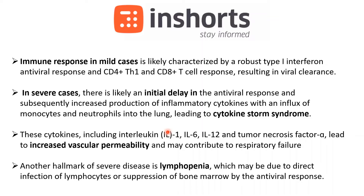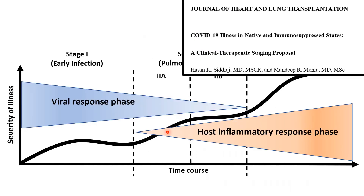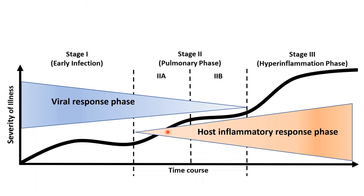This is a very important diagram published in the Journal of Heart and Lung Transplantation, where they proposed a clinical targeted staging of COVID-19 response. Most of our treatment is based on this concept. It is divided into Stage 1, Stage 2, and Stage 3. Stage 1 is the viral response phase. Moving to Stage 2, the pulmonary response phase, the viral response comes down while the host inflammatory response starts to pick up. In Stage 3, the hyperinflammation phase, it is mainly about the host inflammatory response.